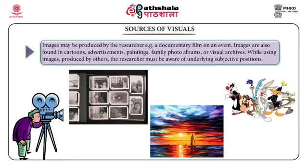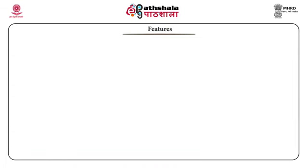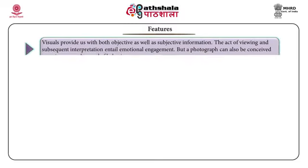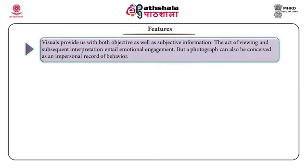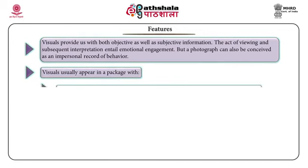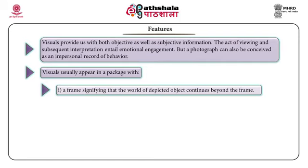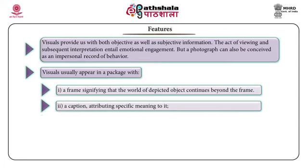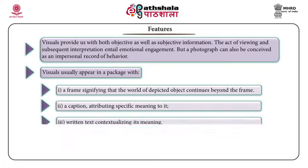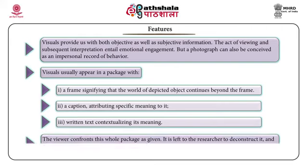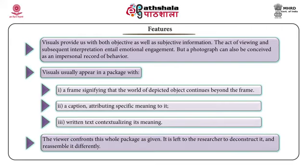What are the features of visuals? Visuals provide us with both objective and subjective information. The act of viewing and subsequent interpretation entail emotional engagement, but a photograph can also be conceived as an impersonal record of behavior. Visuals usually appear in a package with: one, a frame signifying the world of the depicted object continues beyond the frame; two, a caption attributing specific meaning to it; and three, written text contextualizing its meaning. The viewer confronts this whole package as given; it is left to the researcher to deconstruct and reassemble it differently.